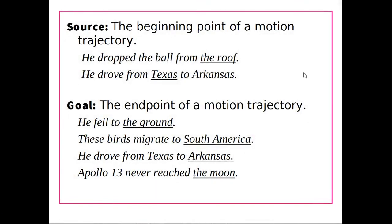Location is in contrast to source or goal, where action occurs across multiple places. A source is the beginning of a motion trajectory. He dropped the ball from the roof — the roof is a source, not just a location, because the action takes place in multiple places but the roof is where it started. If he drives from Texas to Arkansas, Texas is the source of the motion — it starts in Texas but continues through multiple places.